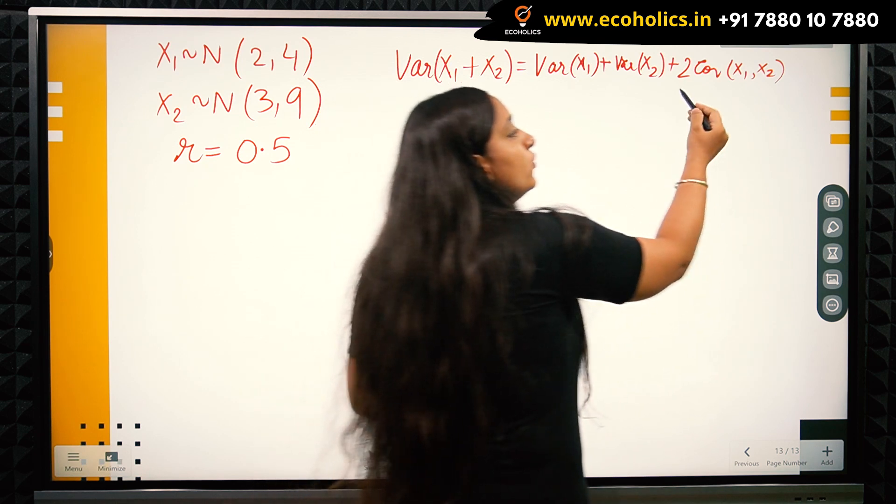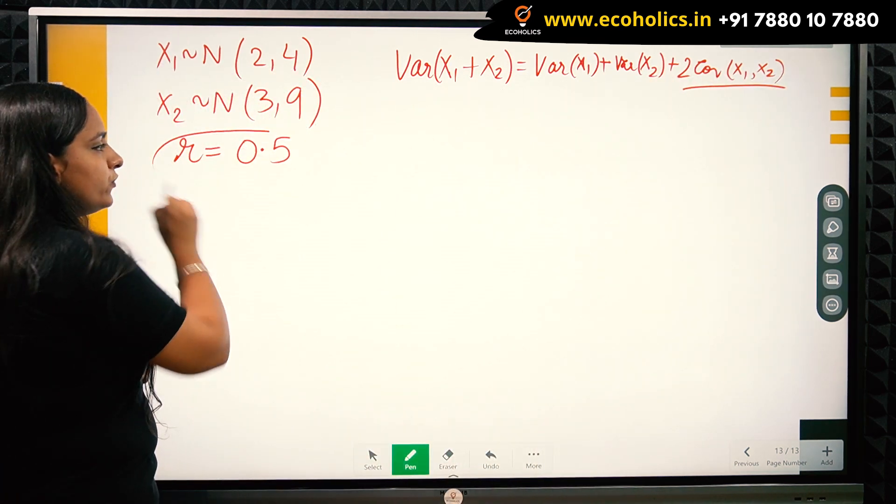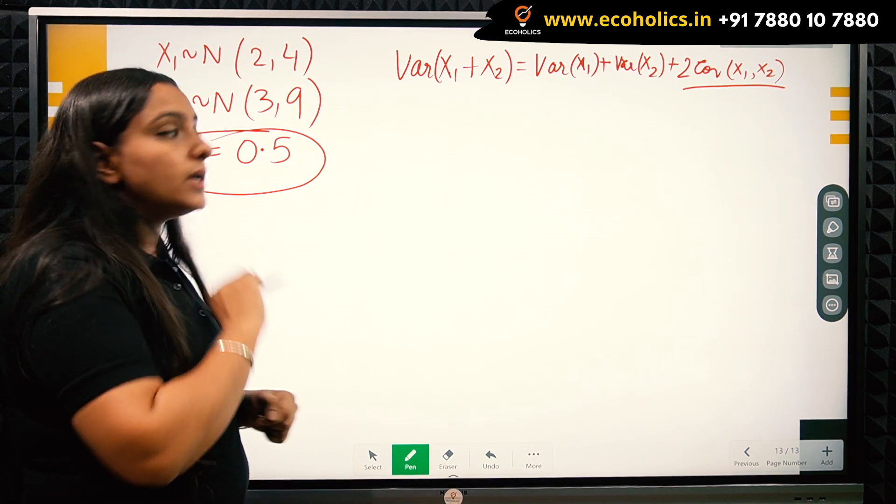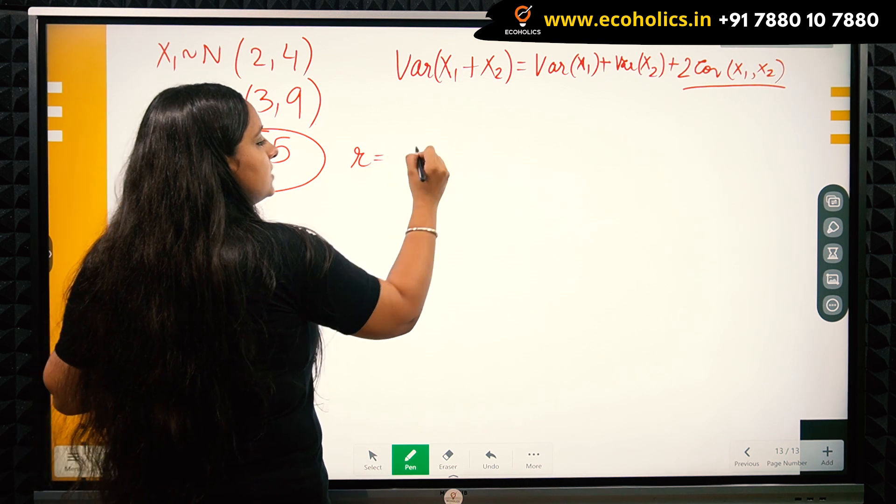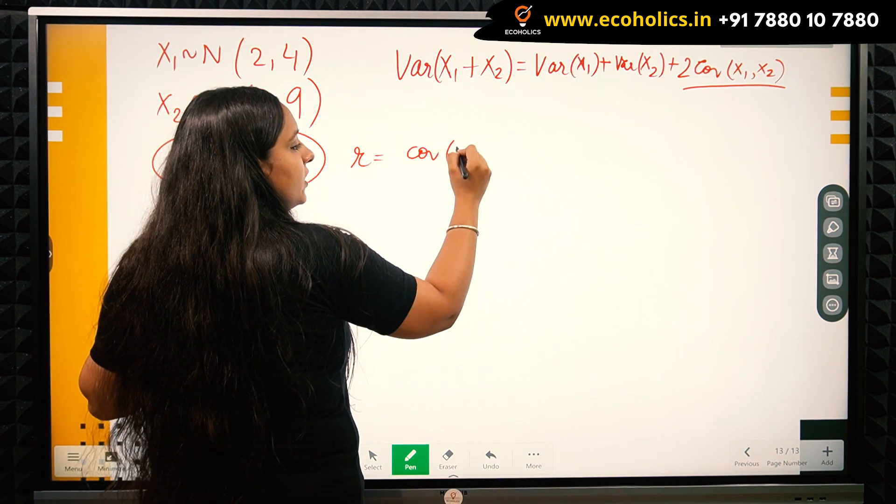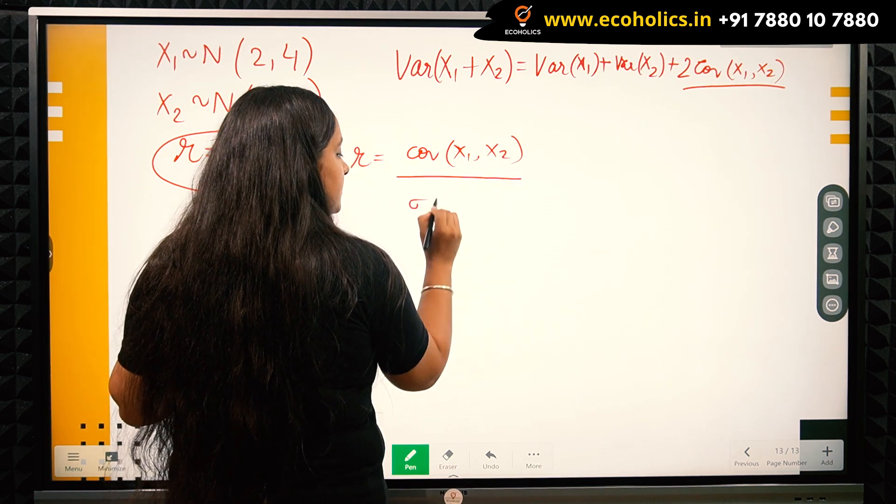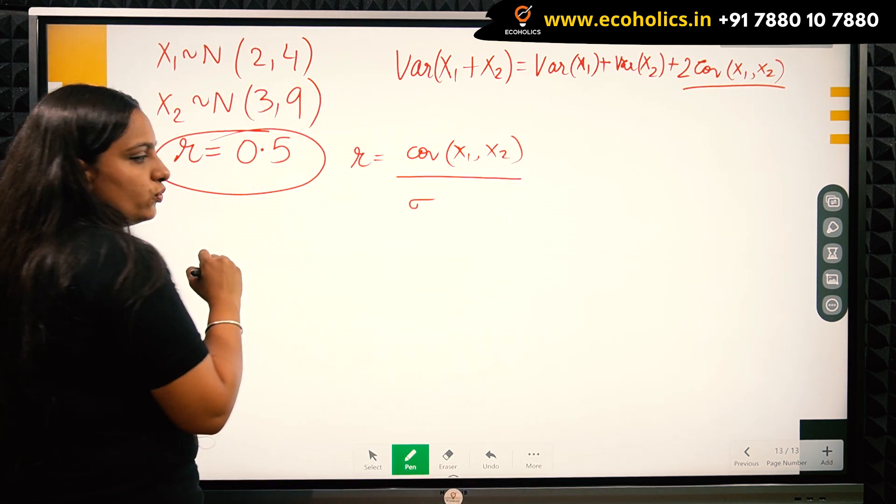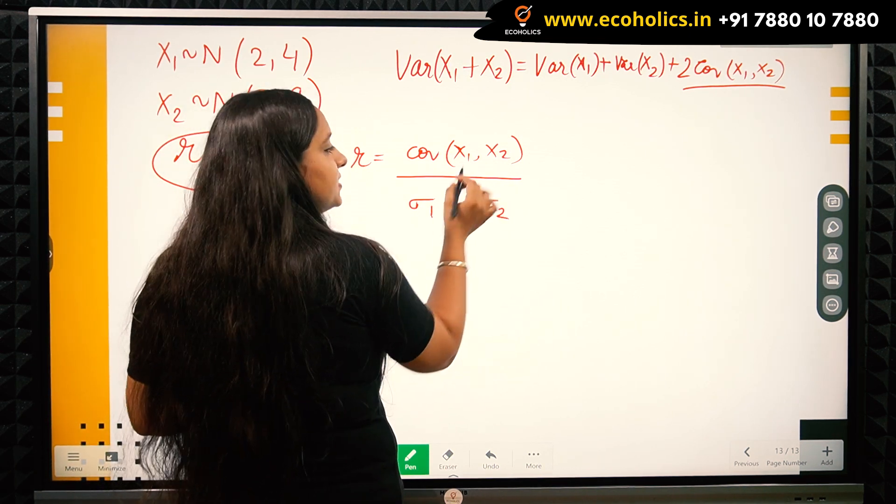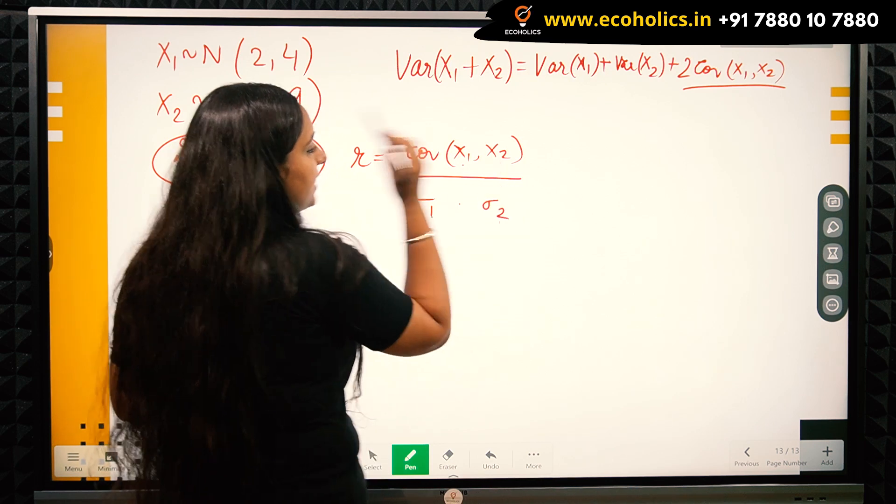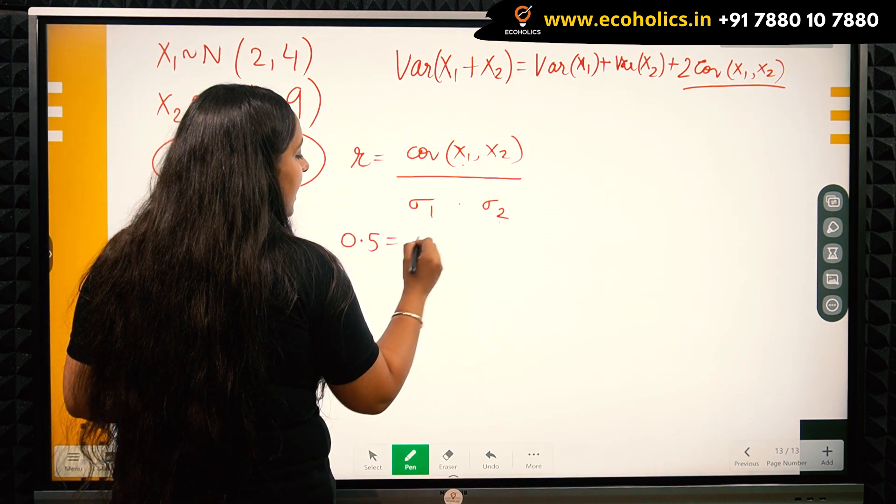But we are given the correlation coefficient, so I can use this to find the covariance. The correlation coefficient r equals covariance of X1, X2 divided by the standard deviation sigma1 times sigma2. So 0.5 equals covariance divided by sigma1 times sigma2. Here 1 represents X1 and 2 represents X2.